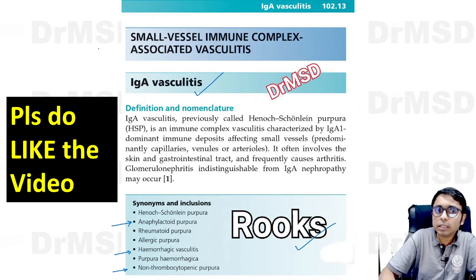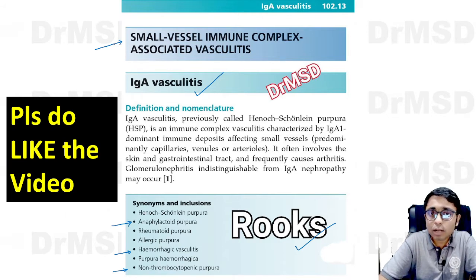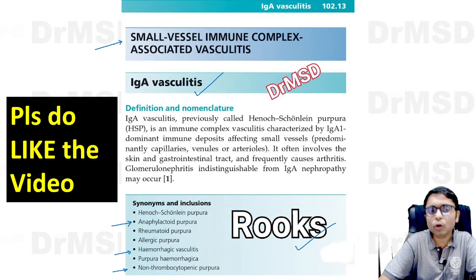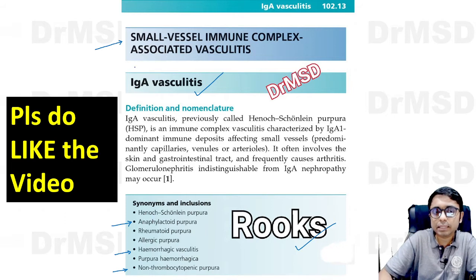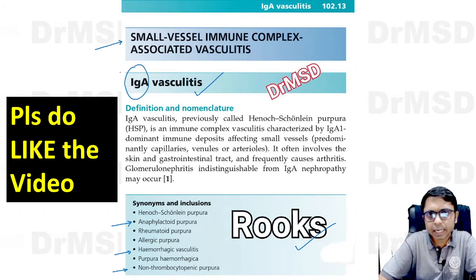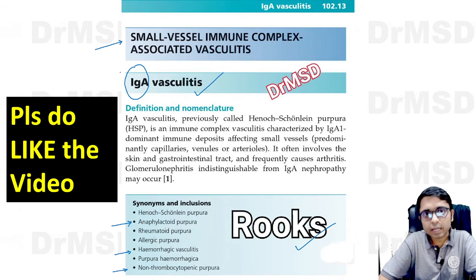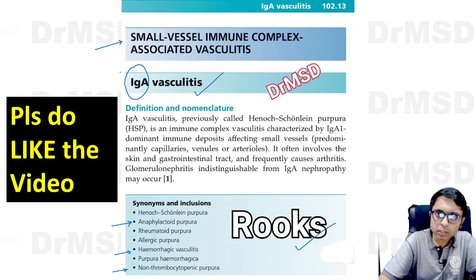Overall, this is broadly a small vessel vasculitis — basically immune complex mediated. The immune complexes are IgA, which can get deposited in the skin, in the renal vessels, and also in the abdominal vessels.